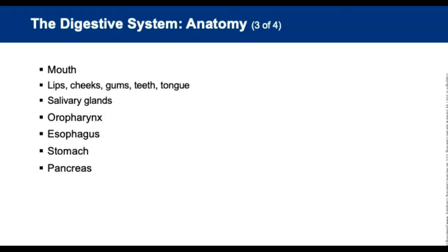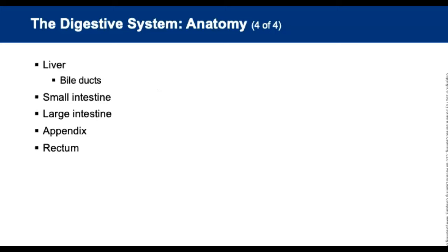The pancreas is a retroperitoneal flat, solid organ lying below and behind the liver and stomach. It has two portions: the exocrine portion secretes pancreatic juice, and the endocrine portion produces insulin and glucagon. The liver is a large solid organ behind the diaphragm in the right upper quadrant, extending into the left upper quadrant. It filters harmful substances, forms clotting factors, produces plasma, and stores sugar and starch for energy. Bile ducts connect the liver to the intestine and carry bile to the gallbladder for storage.